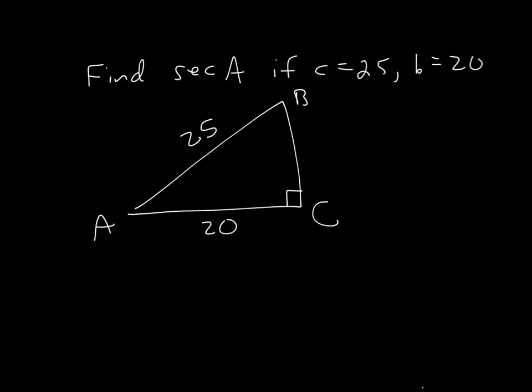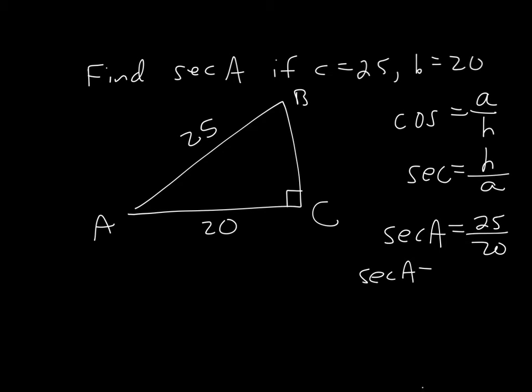And the question says find the secant of angle A. Well, secant is the reciprocal of cosine, so if cosine equals adjacent over hypotenuse, and secant equals hypotenuse over adjacent. And from angle A we have both of those things. This is the hypotenuse and this is the adjacent. This is opposite over here. We don't care about it. We don't have it. It doesn't even matter. Very simple problem. Secant of A equals 25 over 20, and once again we should reduce when we can. Divide both of those by 5 and you get 5 over 4.